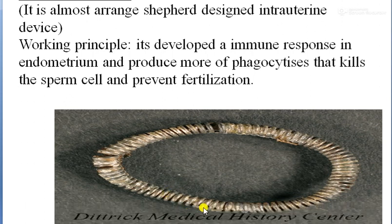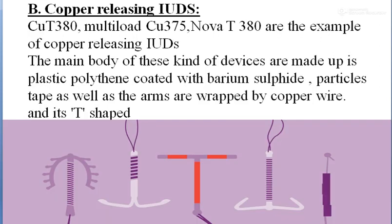The next type is copper-releasing IUDs, or copper-containing IUDs — IUDs made with copper metal. Examples of copper-releasing IUDs include CuT 380, Multiload Cu 375, and Nova T 380. These are all included in the copper T-releasing devices category.